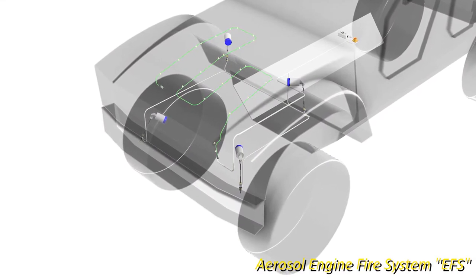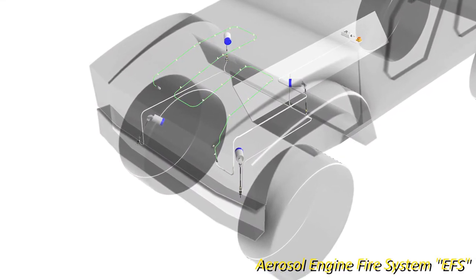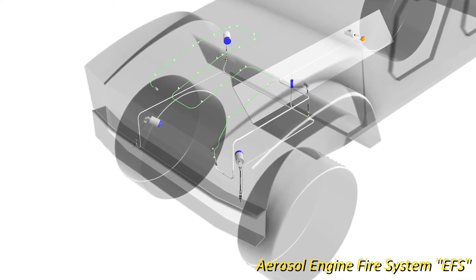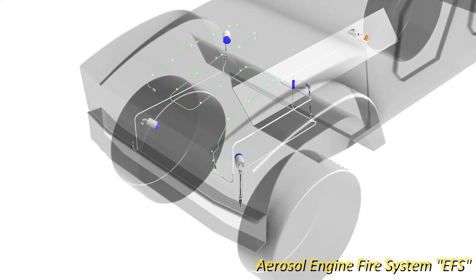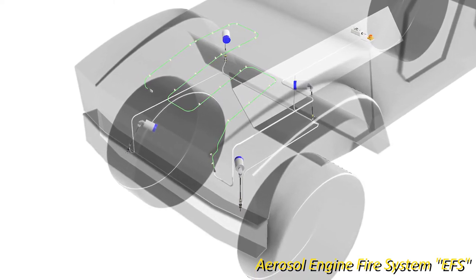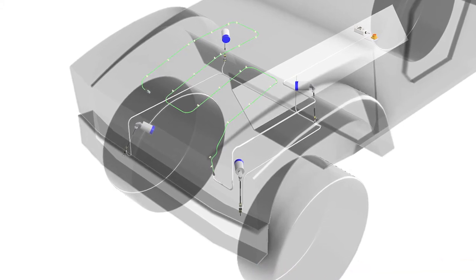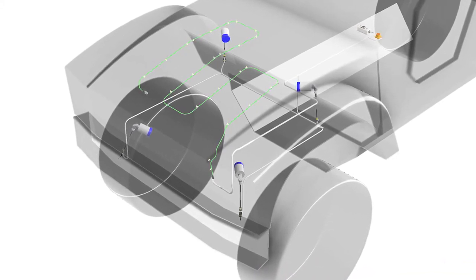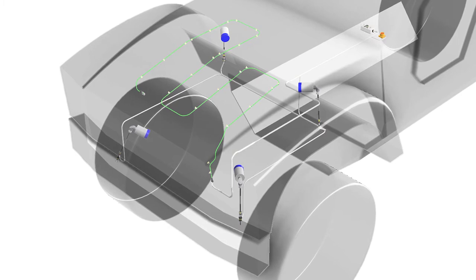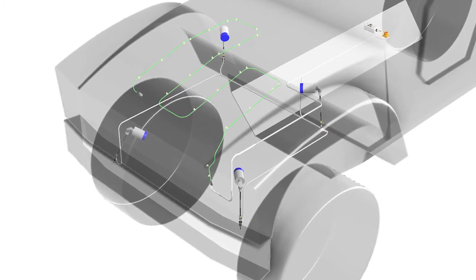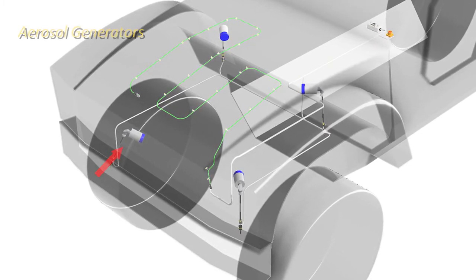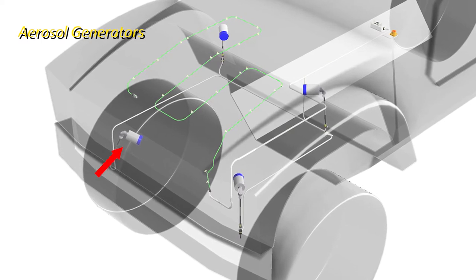The Aerosol Engine Fire System, or EFS, is a cost-effective solution to arming engines with proper fire protection. The EFS is designed and fire-tested to suppress engine fires of all types, from ruptured fuel lines to fully involved compartment fires. It is equipped with four aerosol generators, one in each corner.